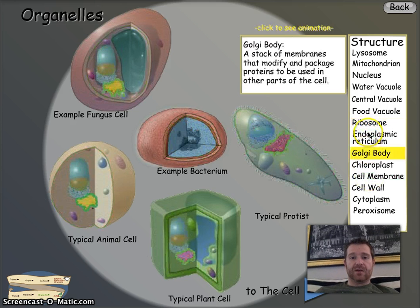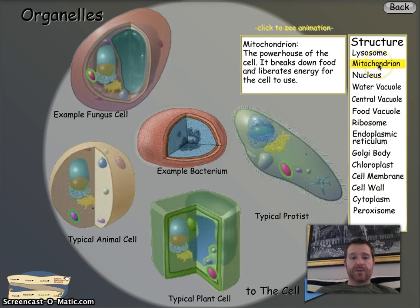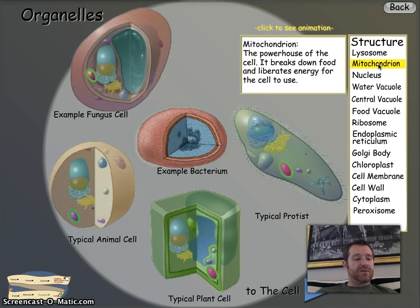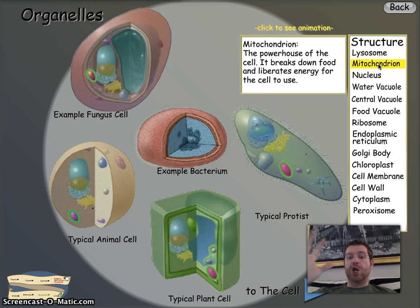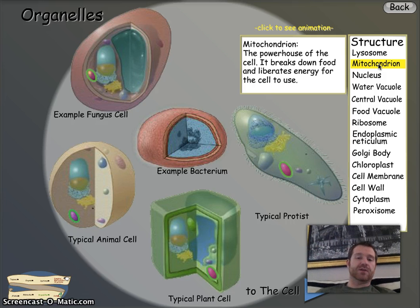Next one is the mitochondria, right up at the top. This is the powerhouse of the cell — it breaks down food and gives energy. You need to put: powerhouse of the cell, and it makes energy. And if you remember from playing Cell Craft, the form of energy is ATP, because that's what kept you alive. Looking at both diagrams, yes it's in plants and yes it's in animals.